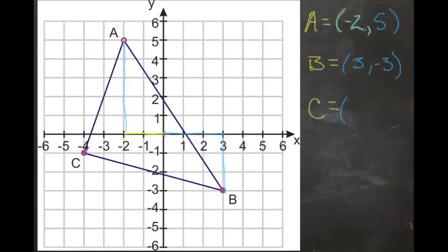For point C, we have negative 1, 2, 3, 4 on the x-axis, so our x-coordinate is -4. Our y-coordinate is -1, so C is (-4, -1).